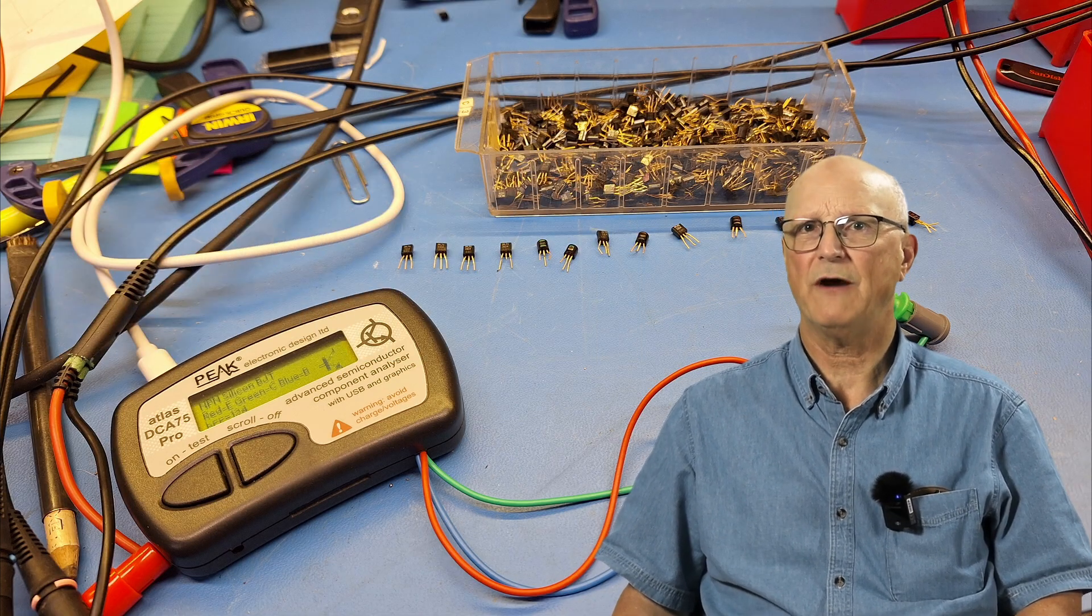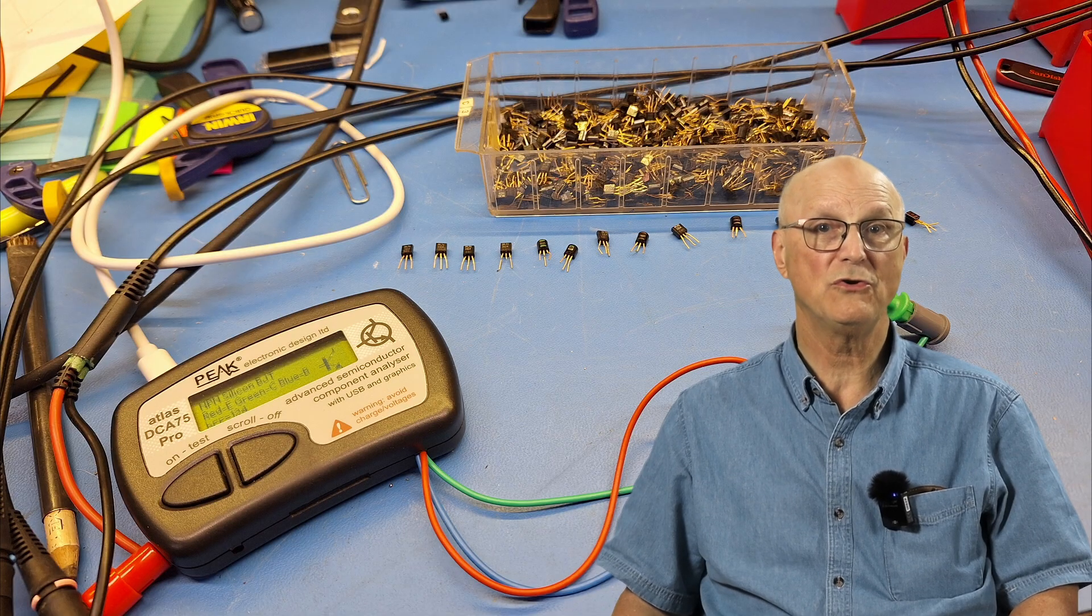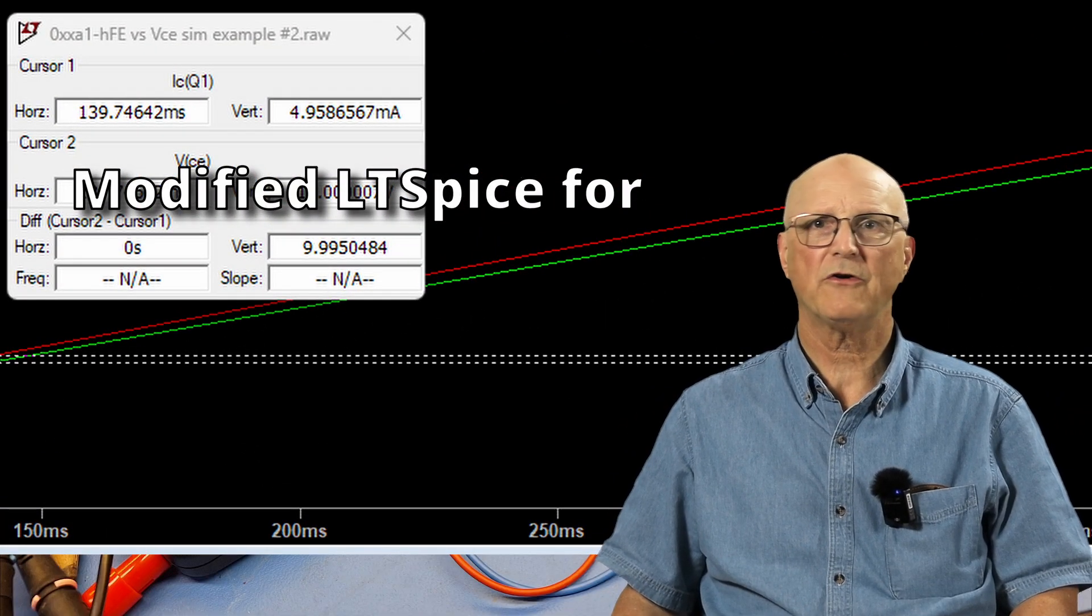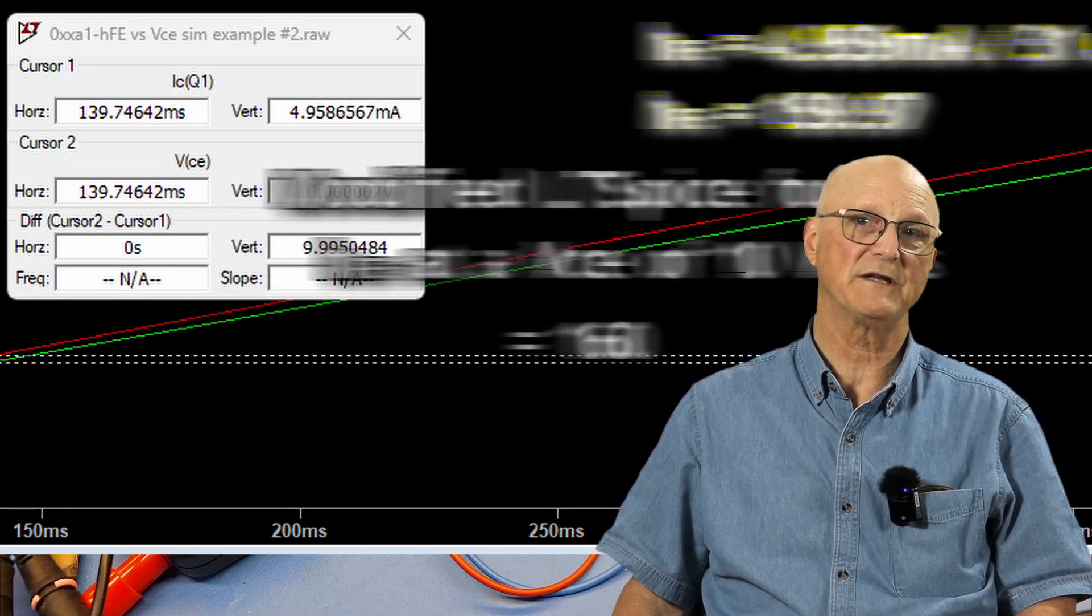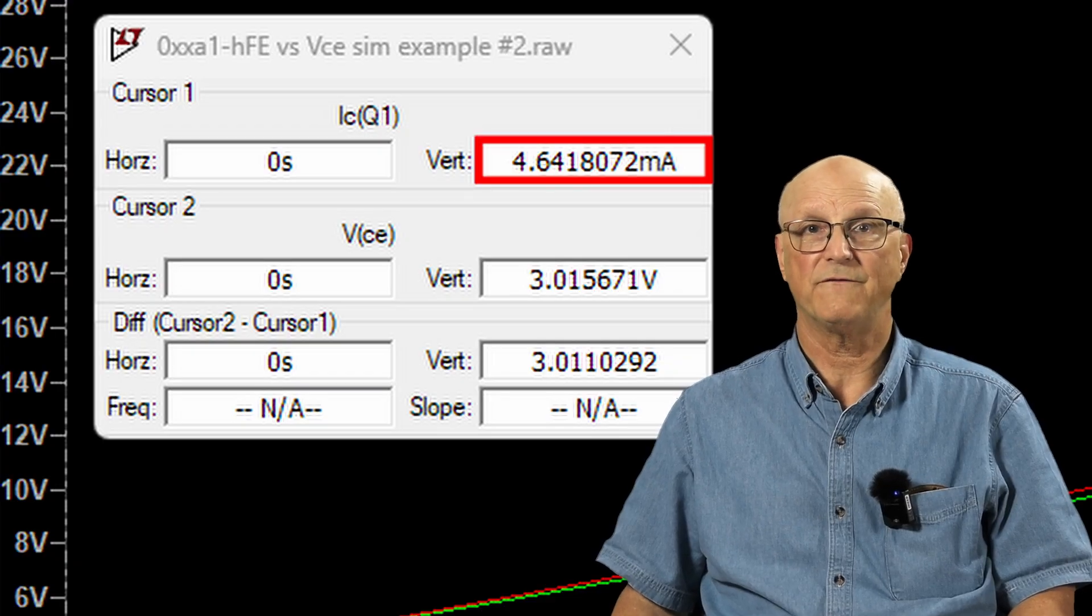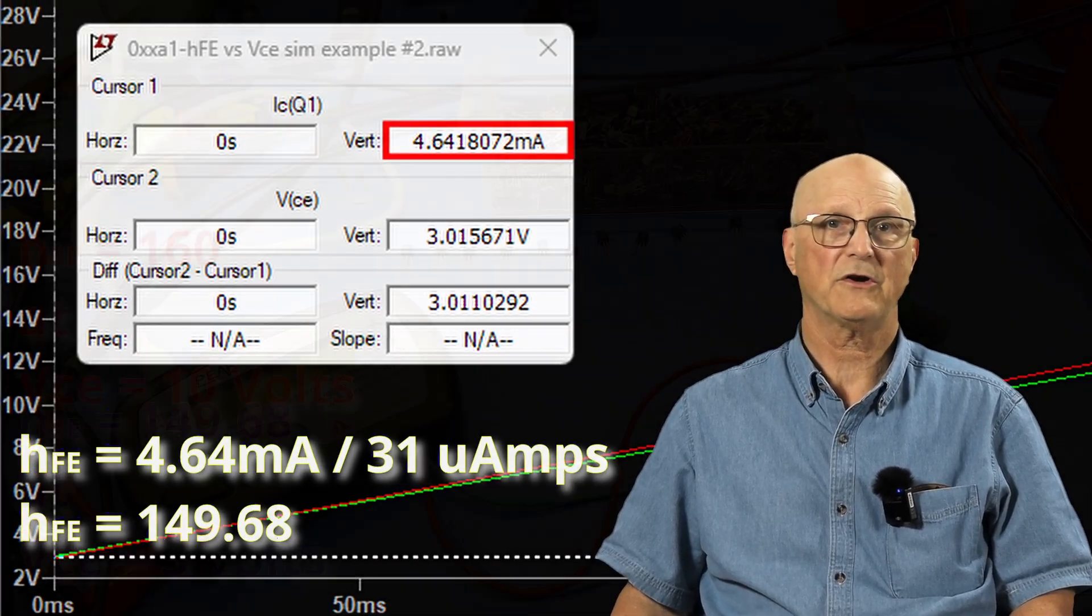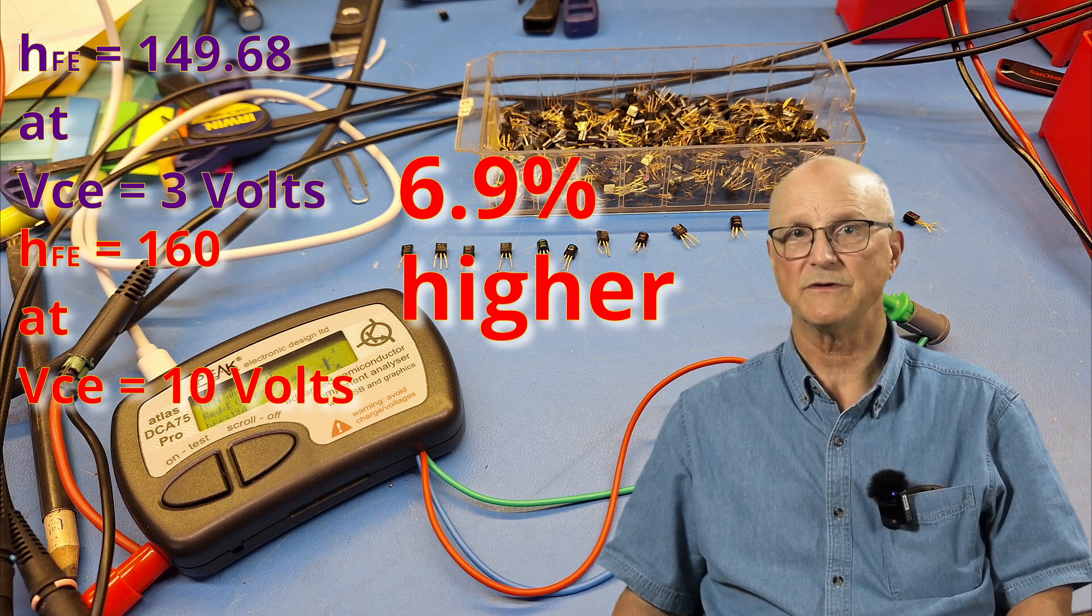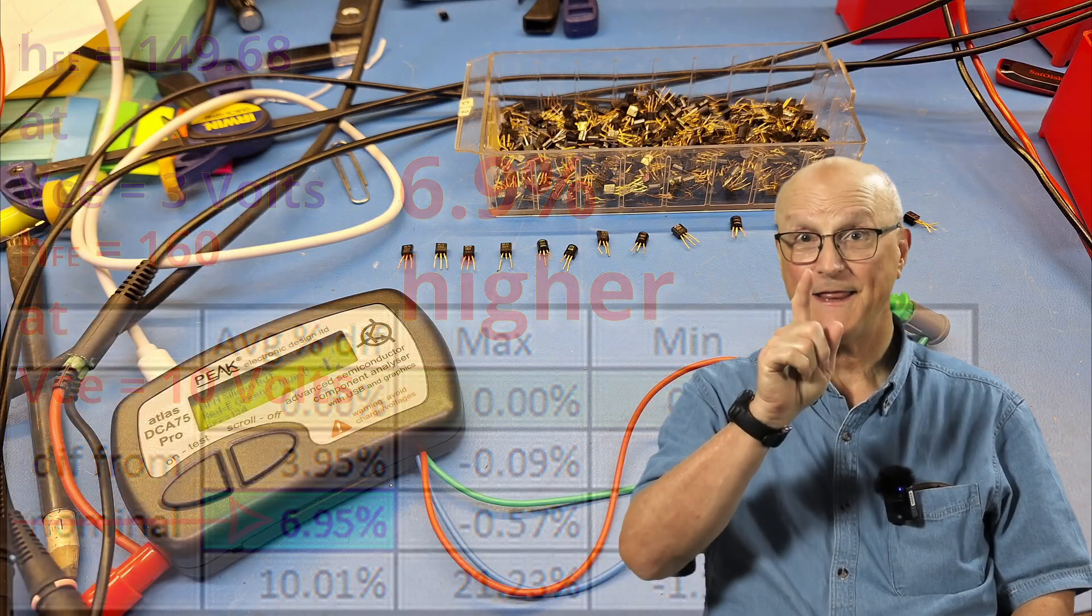In a future video, I will show you how to force LTSPICE to use a specific HFE for your transistor or add a completely new transistor to your simulation. Now, I did a quick modification to the LTSPICE simulation so the current gain or HFE at a VCE of 10 volts was 160 in keeping with the average results of my real-life transistors. How does the simulation look now? Well, I have a collector current of 4.64 milliamps, which gives me an HFE of 149.68. The current gain at a VCE of 10 volts is 6.9% higher than at 3 volts. Funny. This is exactly the change they found in the average change with the real transistors. That's good to know.